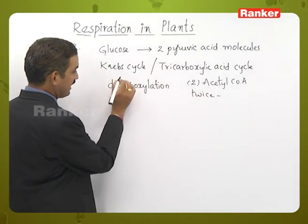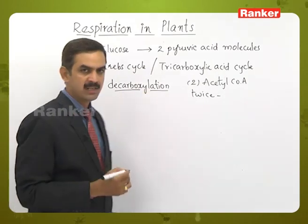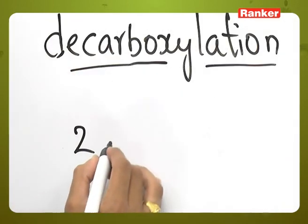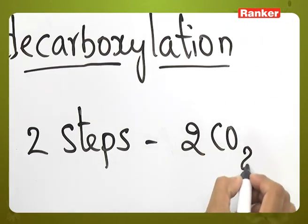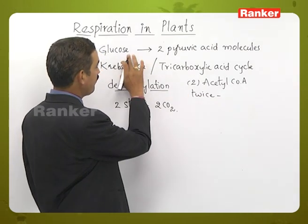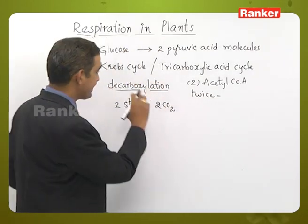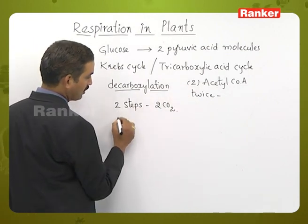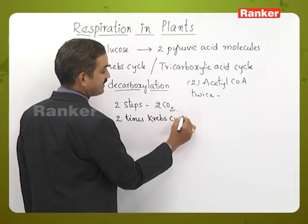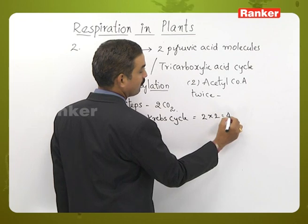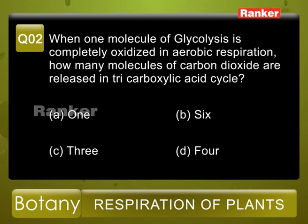In each Krebs cycle, decarboxylation takes place at two steps, releasing one carbon dioxide per step — so two carbon dioxide molecules per cycle. Since the Krebs cycle runs twice for one glucose molecule, that gives 2 × 2 = 4 carbon dioxide molecules in total released from the TCA cycle. Therefore, the correct answer for question number two is option D.